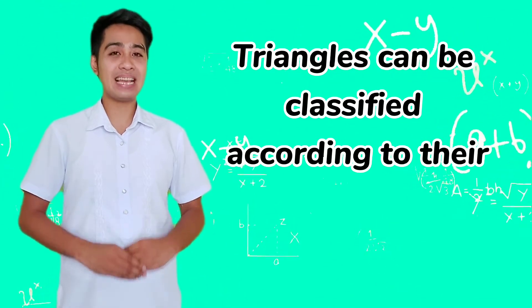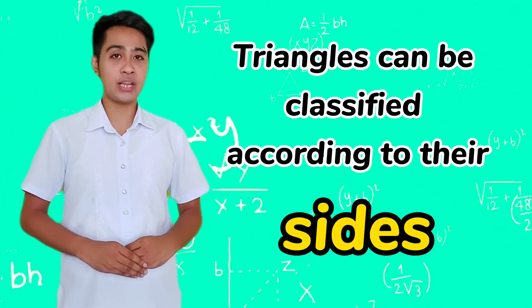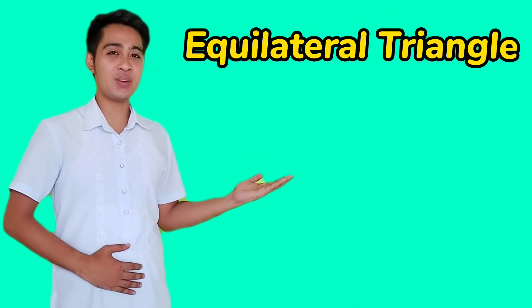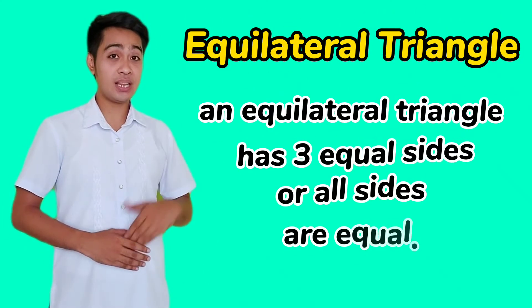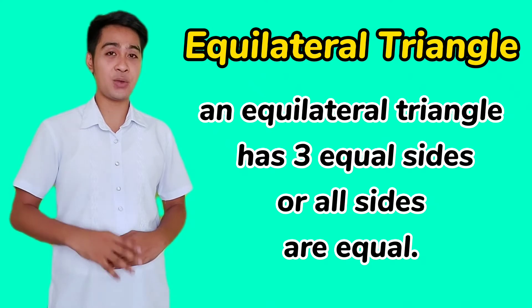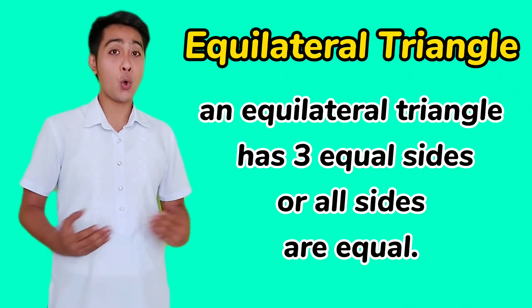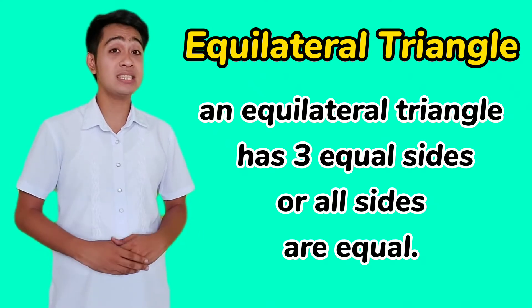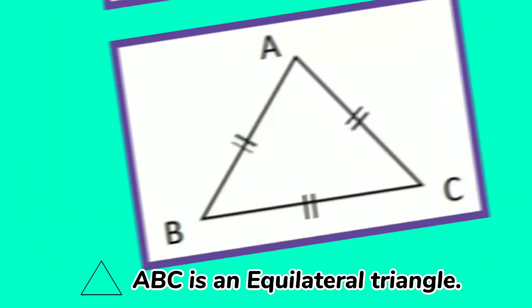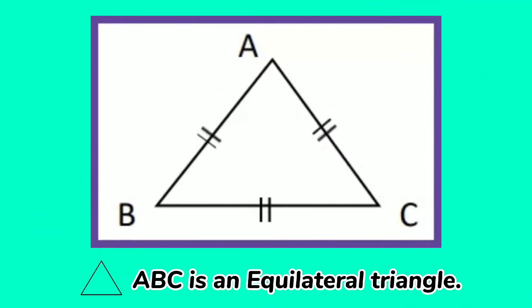Triangles can also be classified according to their sides. The first one is the equilateral triangle. An equilateral triangle has three equal sides, or all sides are equal. So, triangle ABC is an equilateral triangle.